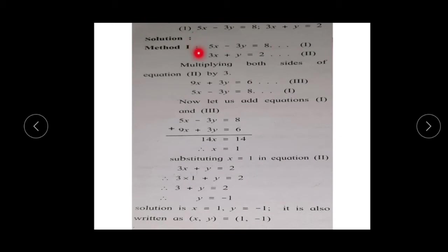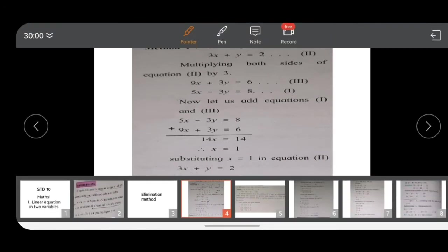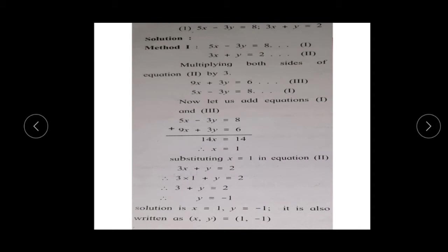Observe the coefficients: the coefficients of x are 5 and 3, and the coefficients of y are -3 and 1. To find the value of any variable, eliminate one of the variables from these 2 equations. First, make the coefficients the same for one variable. Multiply equation number 2 by 3, because equation 2 has the coefficient of y as 1. When we multiply by 3, the coefficients of y in equations 1 and 2 will be the same. This gives a third equation.